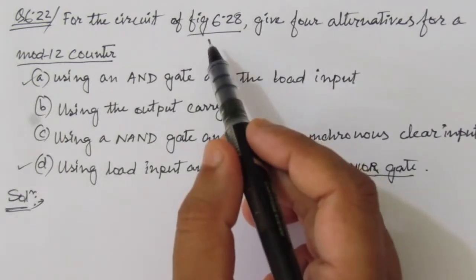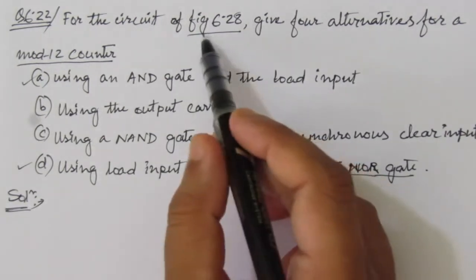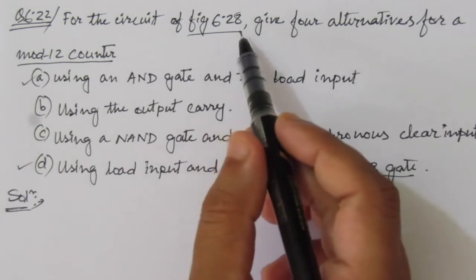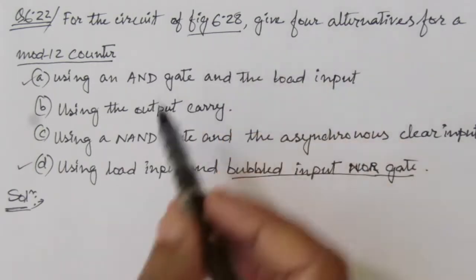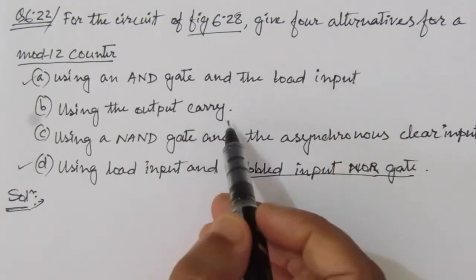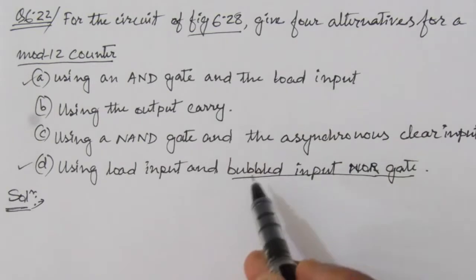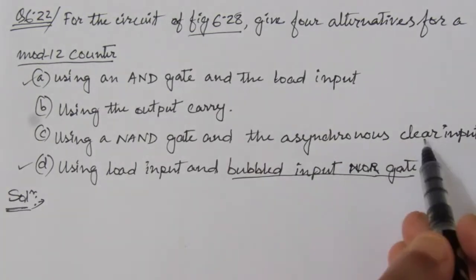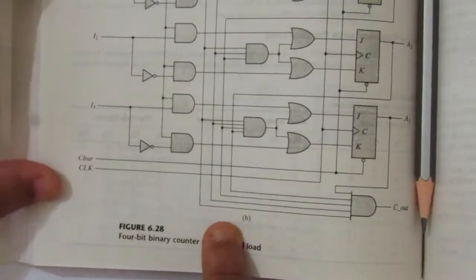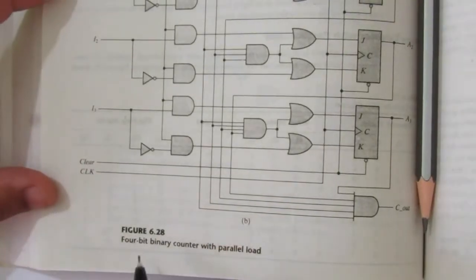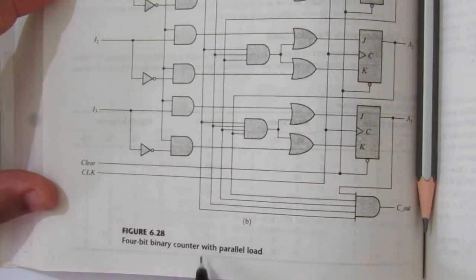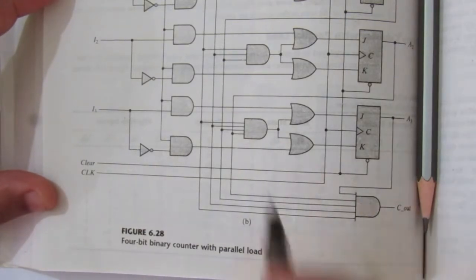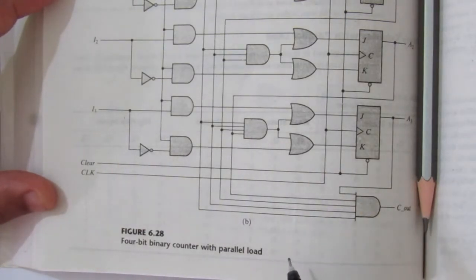Before solving the problem, let us look at figure 6.28 and understand what the load input and carry output are, and then we will see the clear input. This is figure 6.28 — it is a 4-bit binary counter with parallel load. This is the fourth edition book; in the fifth edition book you will find this as figure 6.14.